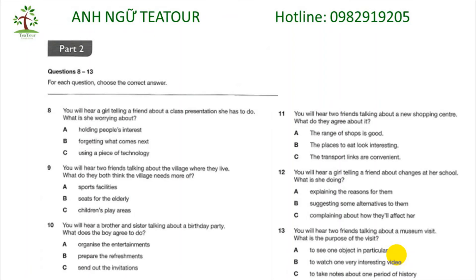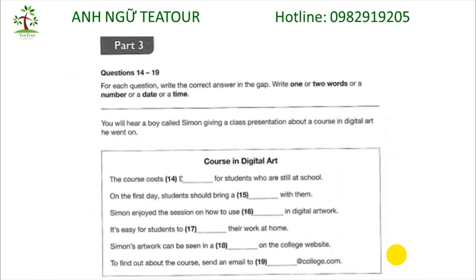That is the end of Part 2. Now turn to Part 3. Questions 14 to 19. For each question, write the correct answer in the gap. Write one or two words, or a number, or a date, or a time. You have 20 seconds to look at Part 3.